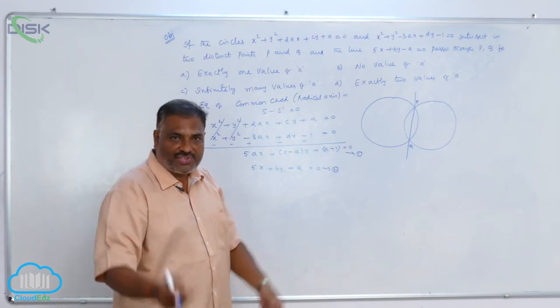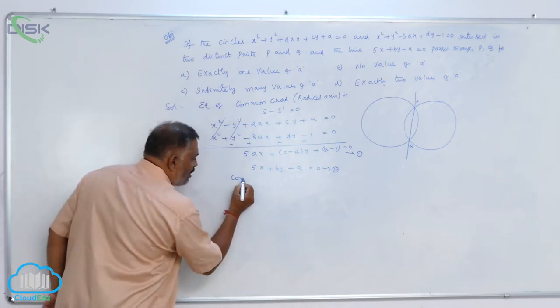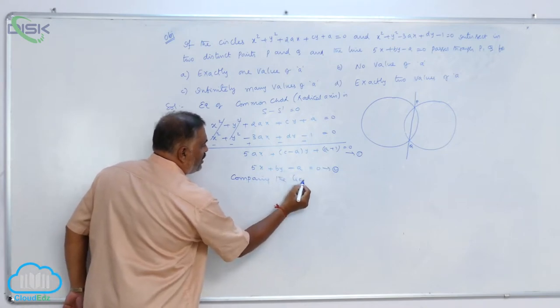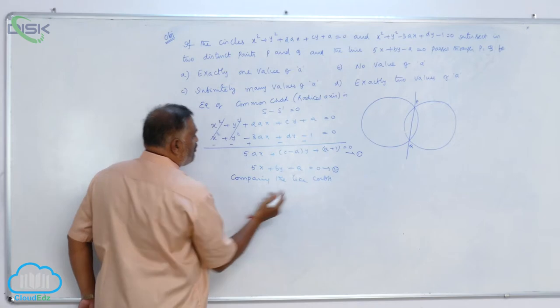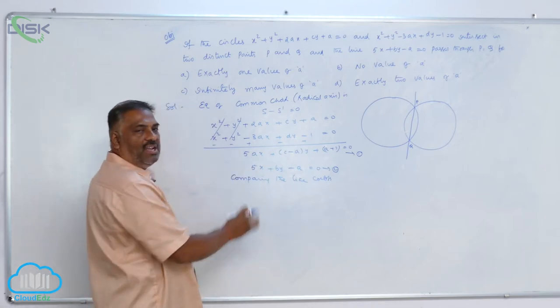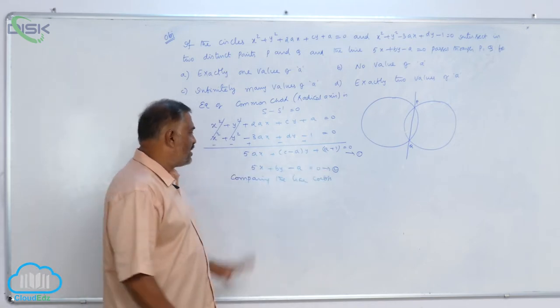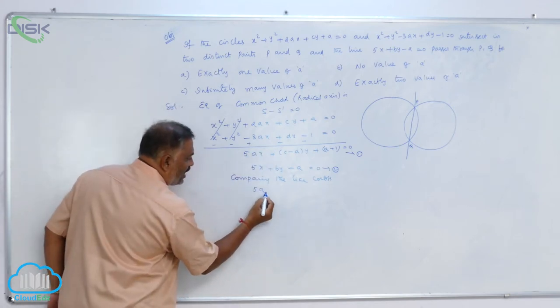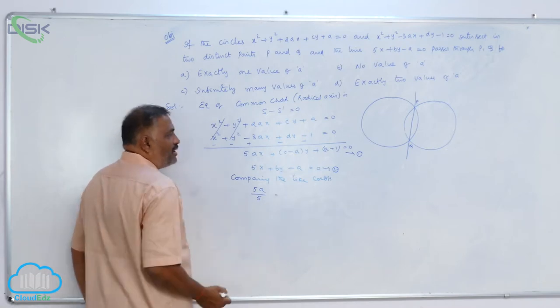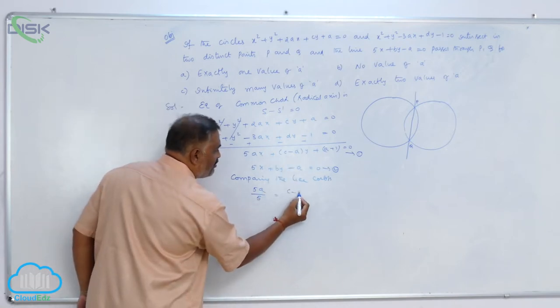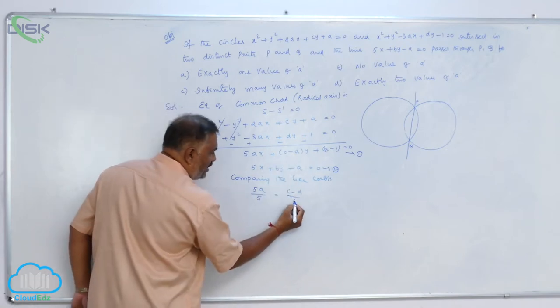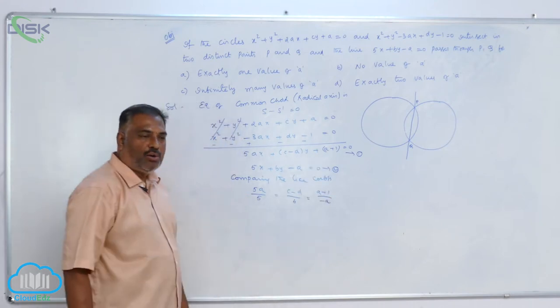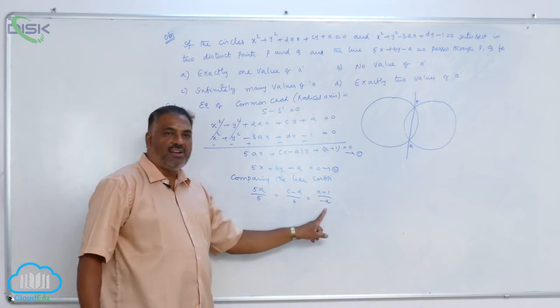When they represent the same equation, we will compare the like coefficients. Comparing the like coefficients means we will compare x coefficient separately, y coefficient separately, constant separately. So take x coefficient by x coefficient: 5a by 5 equals (c minus d) by b equals (a plus 1) by minus a.